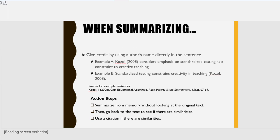When summarizing, give credit by using the author's name directly in the sentence. Example A: Coetzal (2008) considers emphasis on standardized testing as a constraint to creative teaching. Example B: Standardized testing constrains creativity in teaching. (Coetzal, 2008).